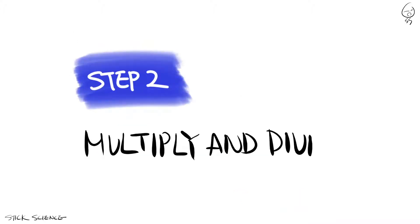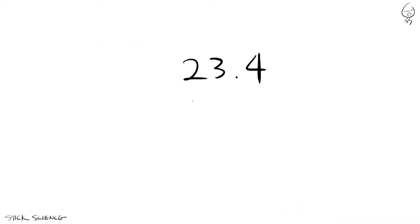Step two, multiply or divide. Next, multiply or divide like you would any other number. 23.4 times 0.12 is of course 2.808.